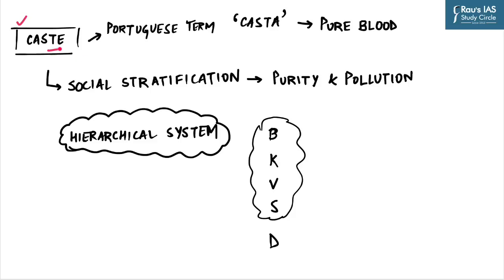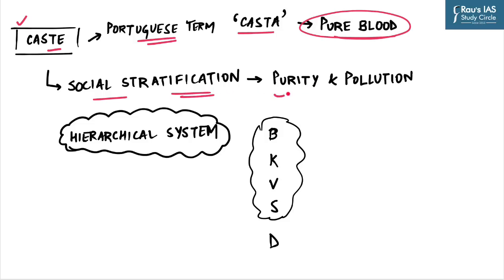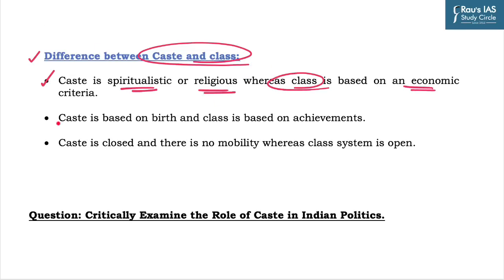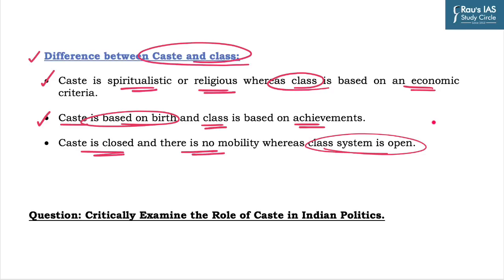In today's discussion, we will analyze what caste is, the difference between caste and class, and the role of caste in politics. The term caste comes from the Portuguese word 'casta,' meaning pure blood, which is a translation of the Indian word 'jati.' The caste system in India is a social stratification based on the concept of purity and pollution — a hierarchical system in which Brahmins occupy the highest place, followed by Kshatriyas, Vaishyas, and Shudras, with Dalits at the lowest. Caste is a spiritualistic or religious concept, whereas class is based on economic criteria. Caste is based on birth and is a closed group with no mobility, whereas class is based on achievements and provides social mobility.